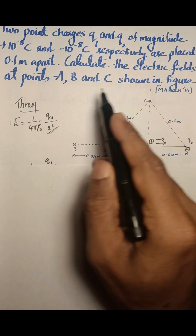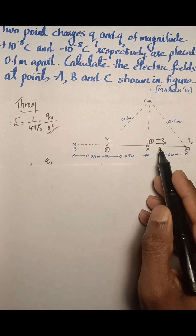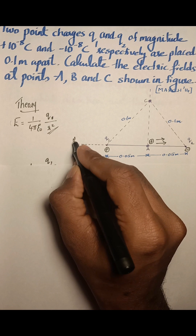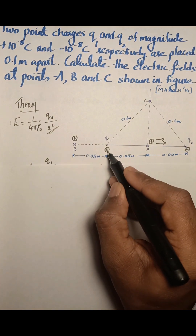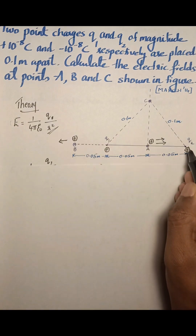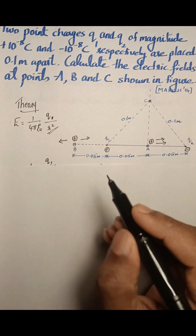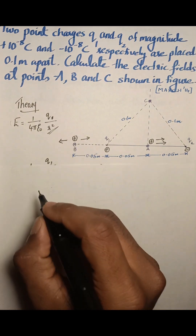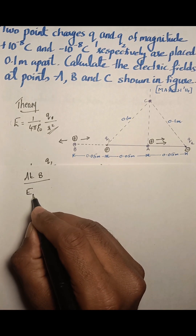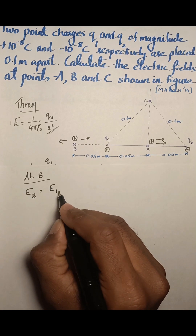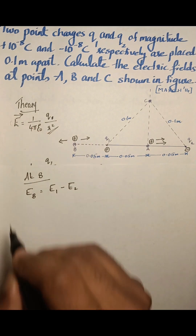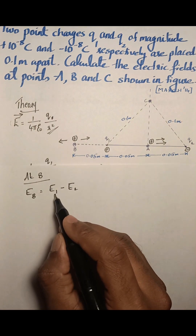Now we need to find the electric field at point B. Point B lies outside the two charges. Assume a unit positive charge is placed at B. The positive charge Q1 will repel this unit charge in one direction, but the negative charge Q2 will attract the unit positive charge in the opposite direction. So the electric fields due to these two charges at point B are opposite to each other. The net electric field at B equals E1 minus E2.